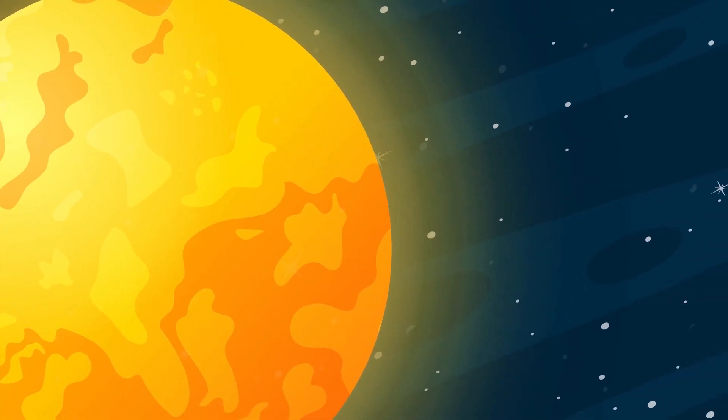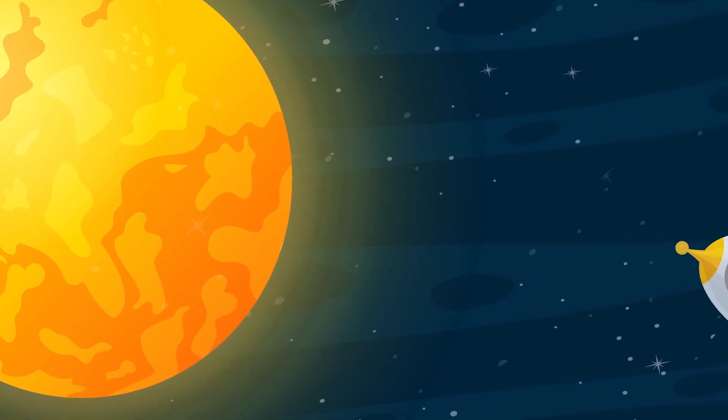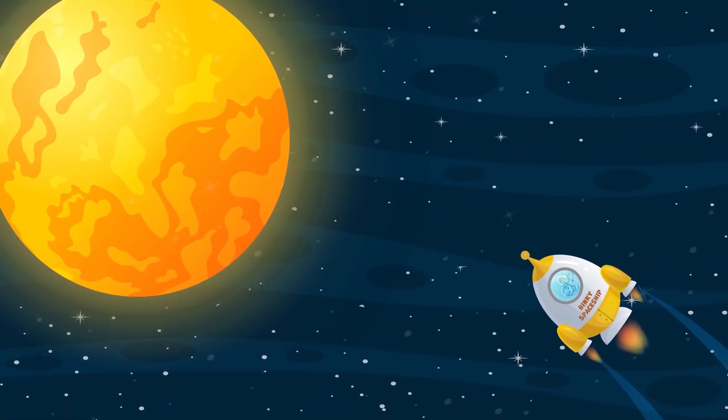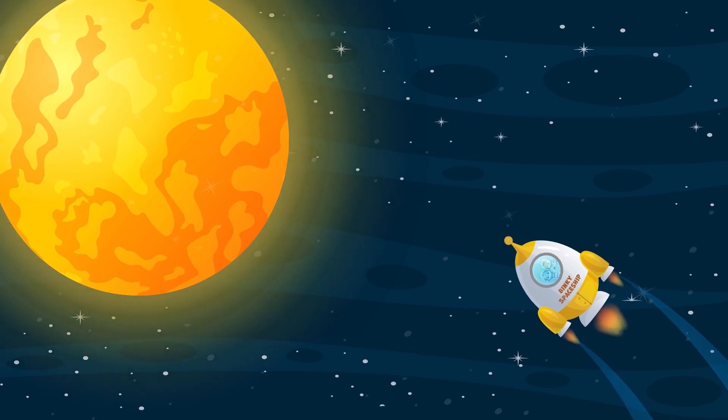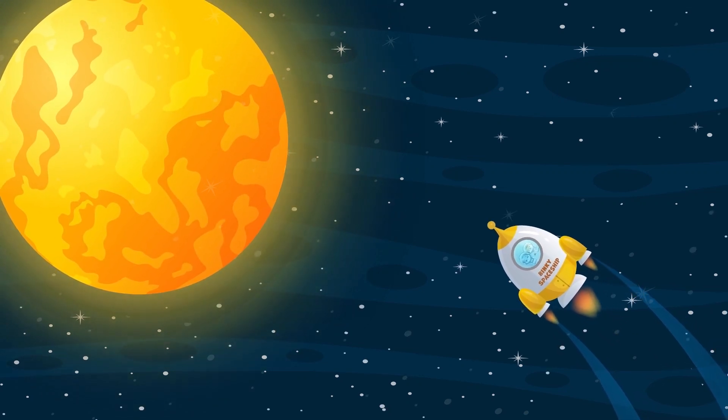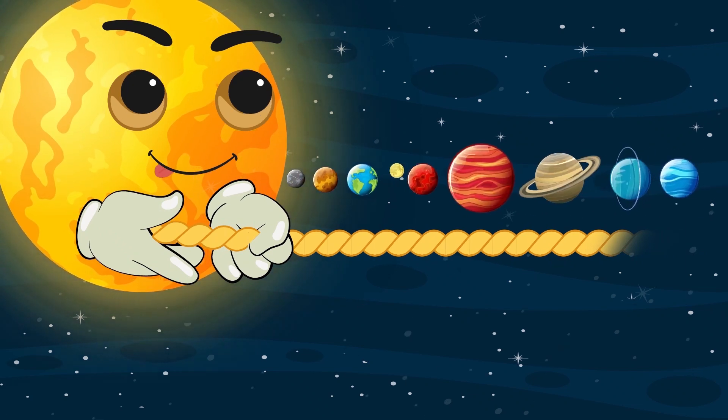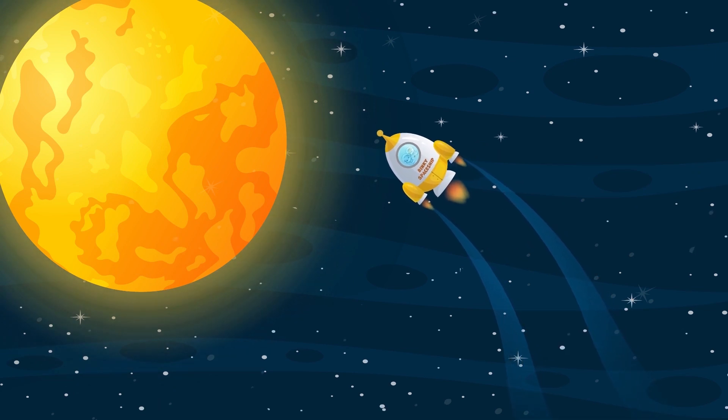Now Binky and his friends go back to the center of the solar system to observe its brightest star. The Sun is the heart of our solar system. Its gravity holds the solar system together. The Sun belongs to so-called yellow dwarf stars category.